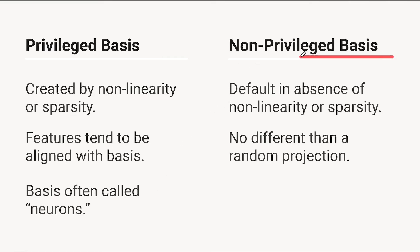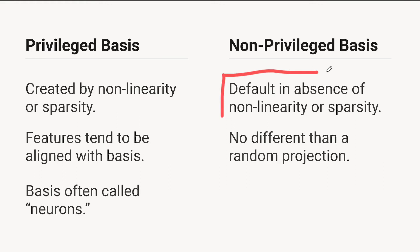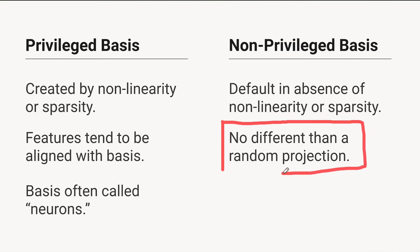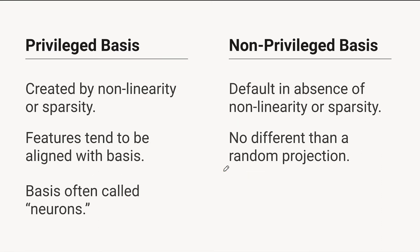A non-privileged basis is sort of the default thing. If you don't have a non-linearity or some kind of regularization, you should expect to not have a privileged basis. That means you shouldn't expect looking at some dimension of that to be any different from looking at a random projection — or at least a random unitary projection of your representation.